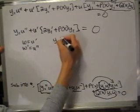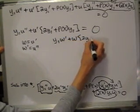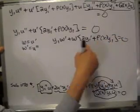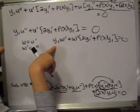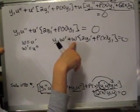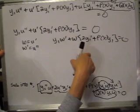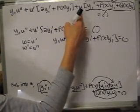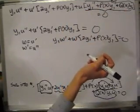The resulting first-order equation is y1·w' + (2y1' + p(x)y1)·w = 0. Because y1 is a known function of x, this equation is either separable or first-order linear in w, and we can solve it to get a general form for the solution. This justifies why the term involving u always drops out — it's because y1 is a solution of the original differential equation.